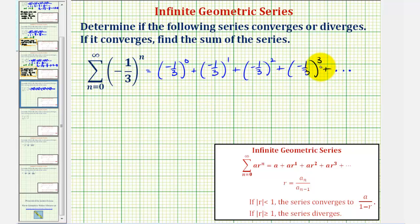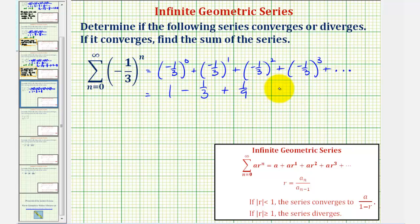Let's simplify each term. The first term would be negative one to the zero, which is one. Then we have negative one-third to the first, which is negative one-third — so we write minus one-third. Then negative one-third squared is positive one-ninth, so plus one-ninth. Then negative one-third to the third is negative one-twenty-seventh, so we write minus one-twenty-seventh, and then plus, et cetera.